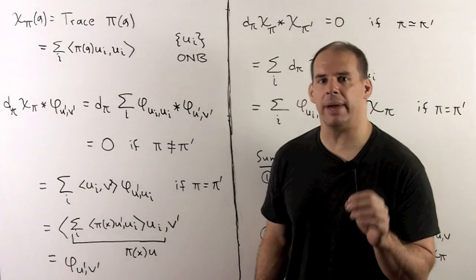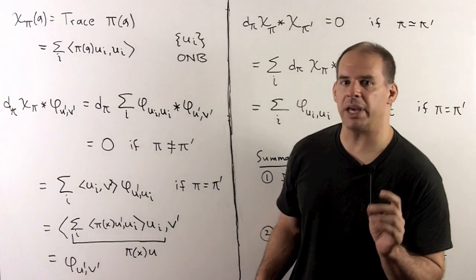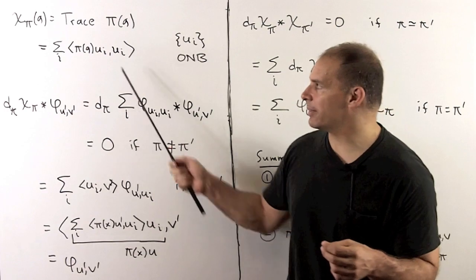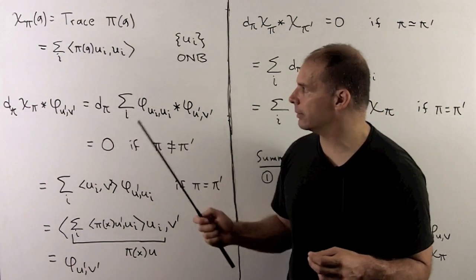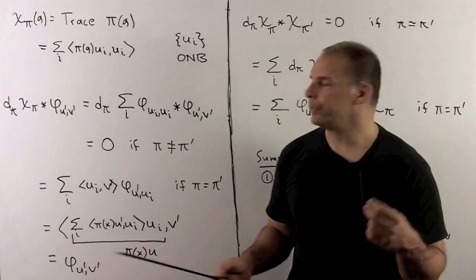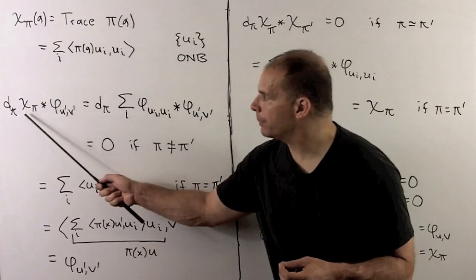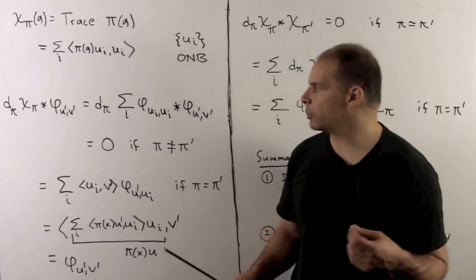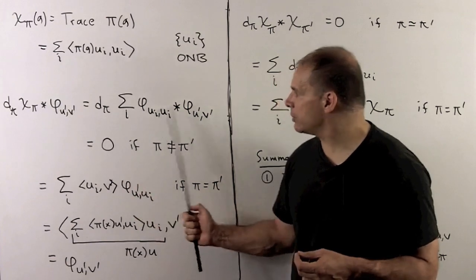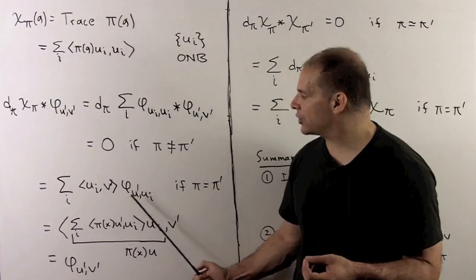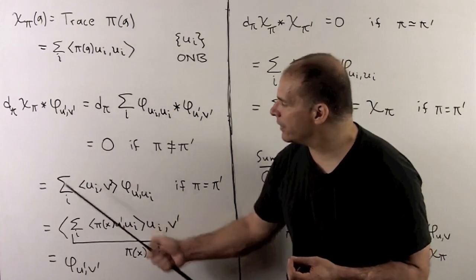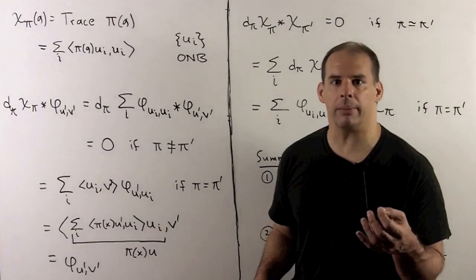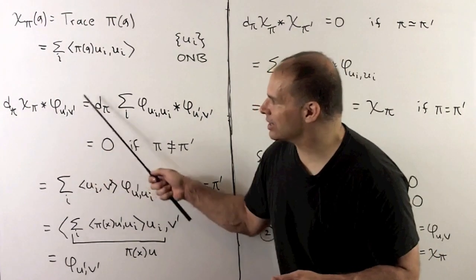Now let's compute the convolution of a character with a matrix coefficient. We choose an orthonormal basis for our vector space. Then we can write our character as a sum of matrix coefficients — we are taking the sum of the diagonal entries for the associated matrix for pi(g). When we compute, scaled by the dimension: if the representations are inequivalent, we get zero; if they are equal, we refer to the previous formula, take the outside terms in an inner product, take the inside terms and make a matrix coefficient, move everything to the first coordinate, and get pi(x)u. So we get the matrix coefficient for u prime and v prime. This convolution just leaves the matrix coefficient alone.